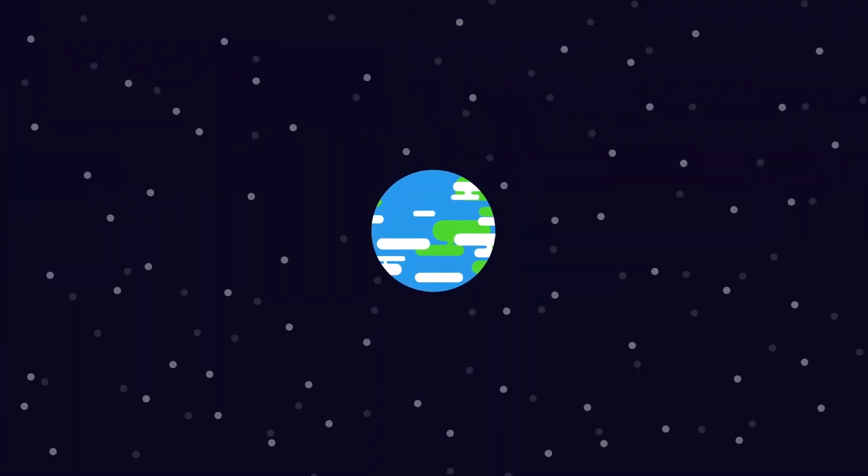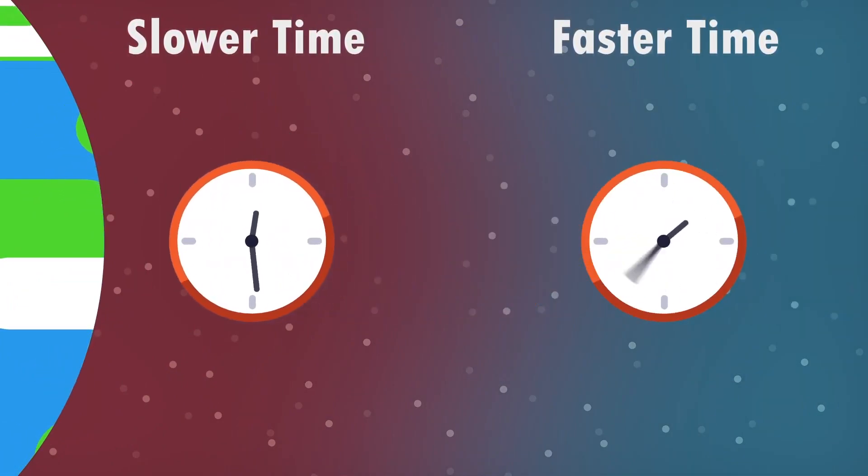You see, objects with a lot of mass, like the Earth, slow down time around it. The closer you get to it, the slower time gets.